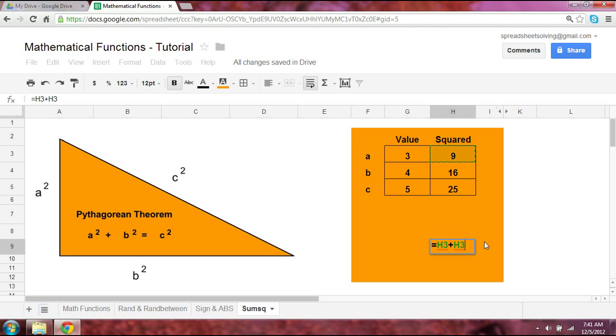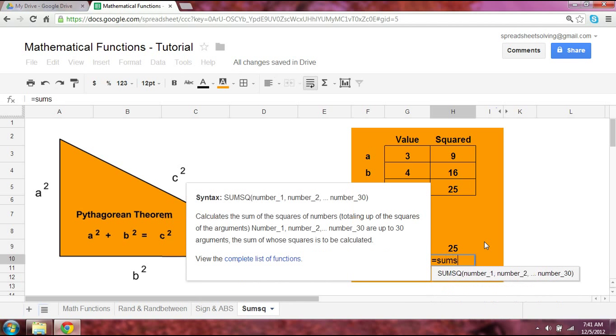Now, what I want to show you today is how Google Spreadsheet can calculate all this using a single function. The function goes as follows: Begin with an equal sign, followed by SUMSQ - S-U-M-S-Q.